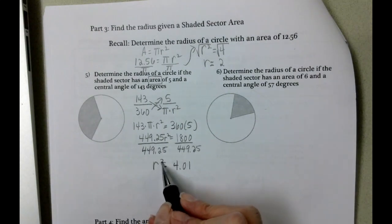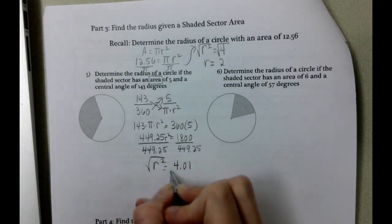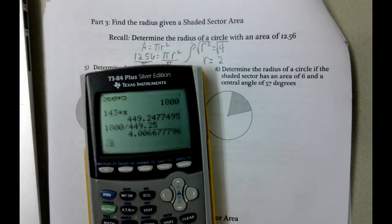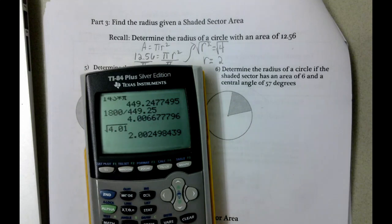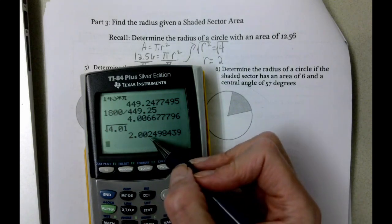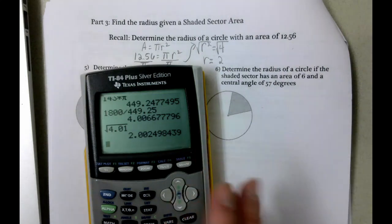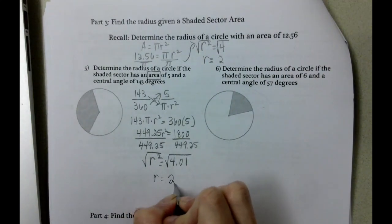And then we take the square root of 4.01. We get 2.002. Looking at the 2, that's still going to leave that 0 because 2 is less than 5. So our radius is 2.